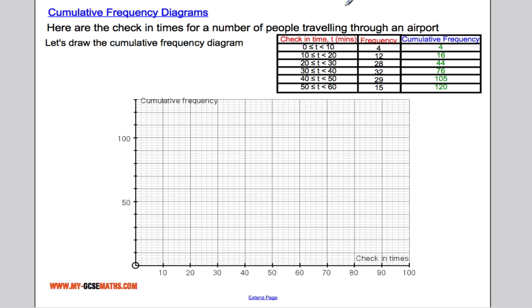So here's our data again, and I want to plot this as a cumulative frequency diagram. In order to do that, I'm going to need two pieces of information from each row: the upper bound of the class interval and the cumulative frequency. We're going to take the upper bound from each one and plot that against the cumulative frequency.